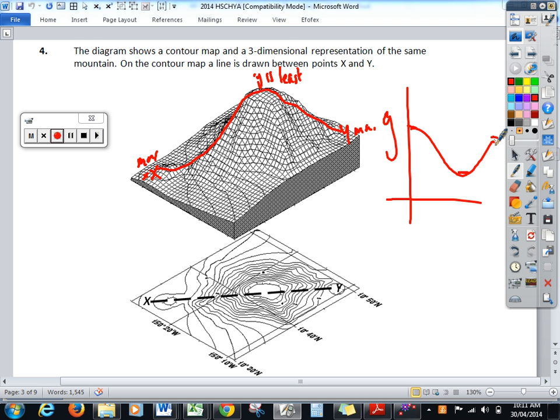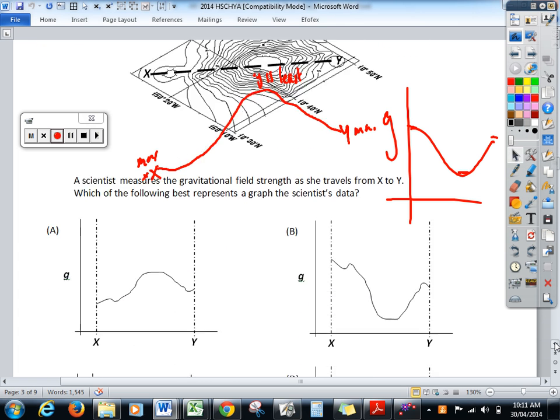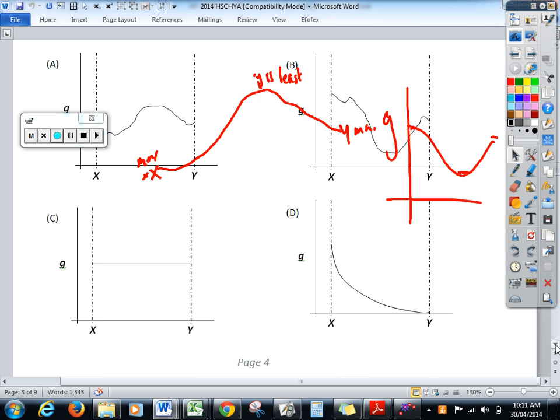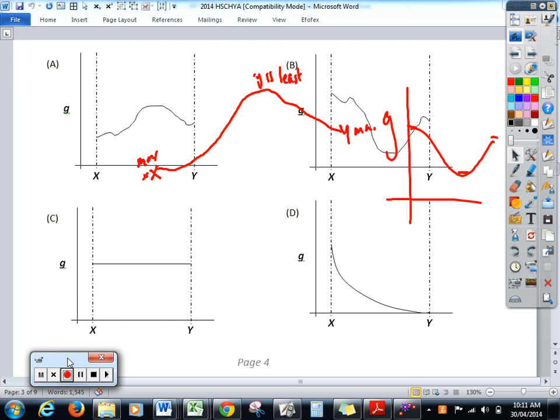So we're looking for a graph that will have G as the least in this position here and maximum there and there. So it's got to look like that. So it's a very simple process to choose which of the three graphs it will have to be. And the only two which match any type of shape that would be worthwhile are A or B. And B is the one that matches our criteria. C is testing whether or not you knew that G, the gravitational field vector, 9.8, does vary on the surface of the earth. If you chose C, then you're thinking it doesn't change at all. That's not true.